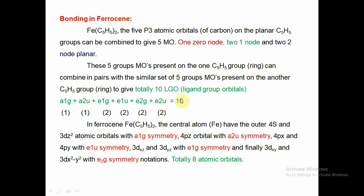In ferrocene, the central iron atom contributes 8 atomic orbitals: the 4s and 3dz² with a1g symmetry, 4pz with a2u symmetry, 4px and 4py with e1u symmetry, 3dxz and 3dyz with e1g symmetry, and 3dxy and 3dx²-y² with e2g symmetry. These 10 ligand group orbitals from the two cyclopentadienyl rings and 8 atomic orbitals of the iron atom are involved in the bonding.